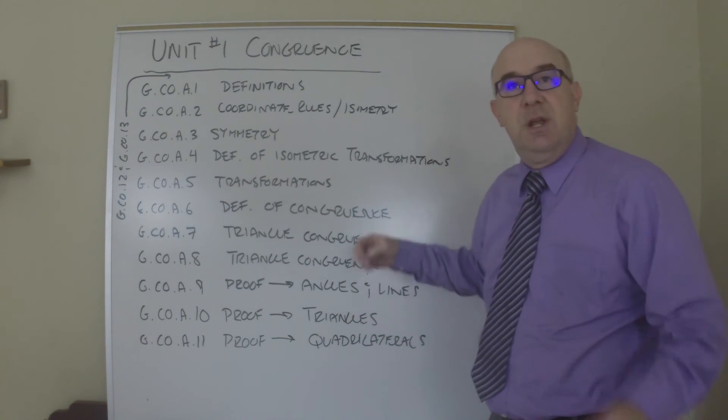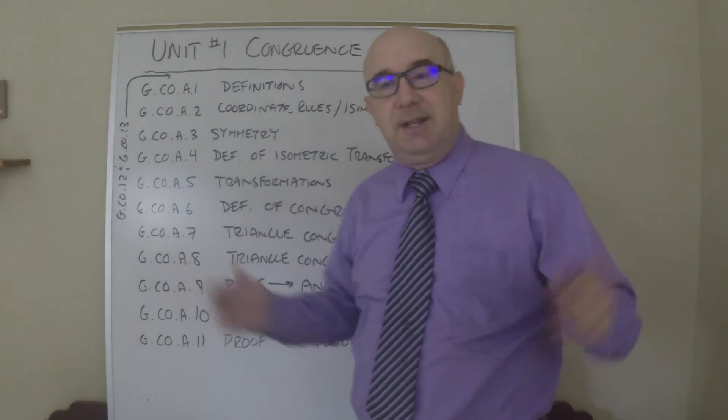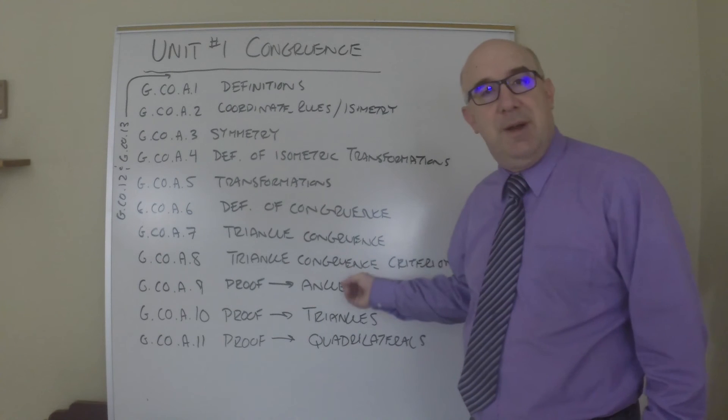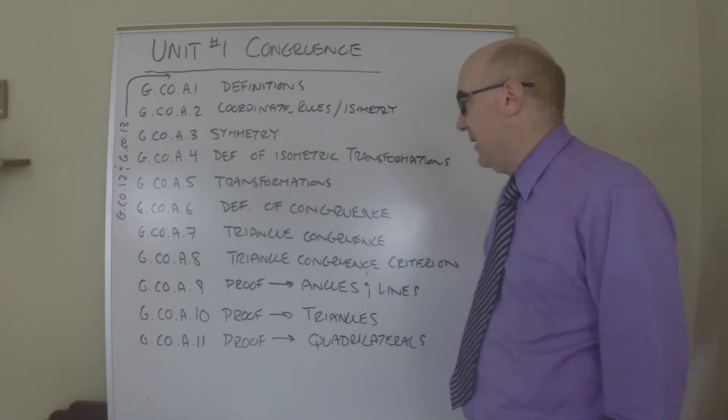Triangle congruence, triangle criteria—angle side angle, side angle side, the classic stuff. And then we get to proving theorems about angles, proving about triangles, proving about quadrilaterals.